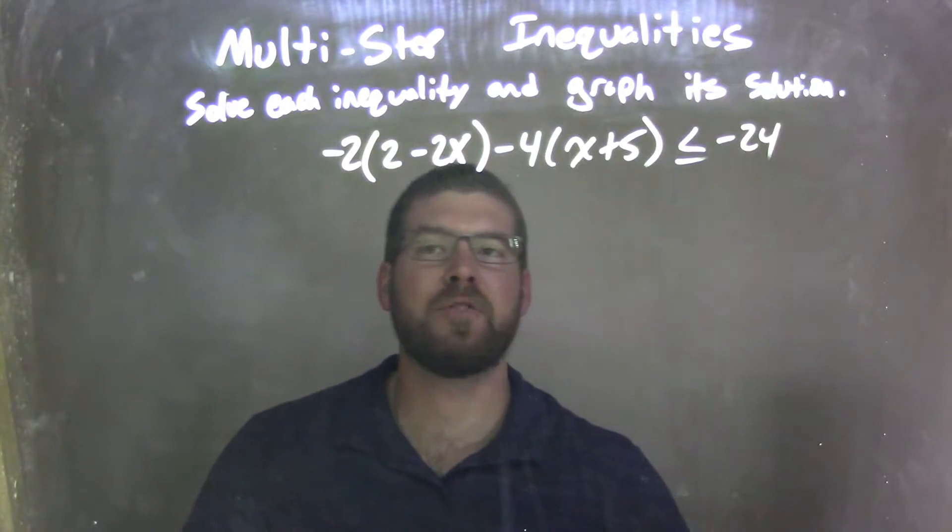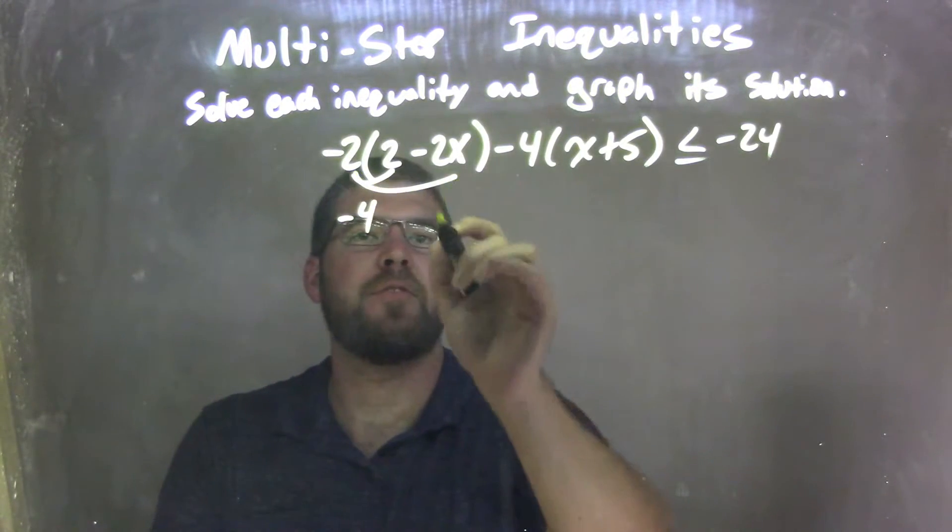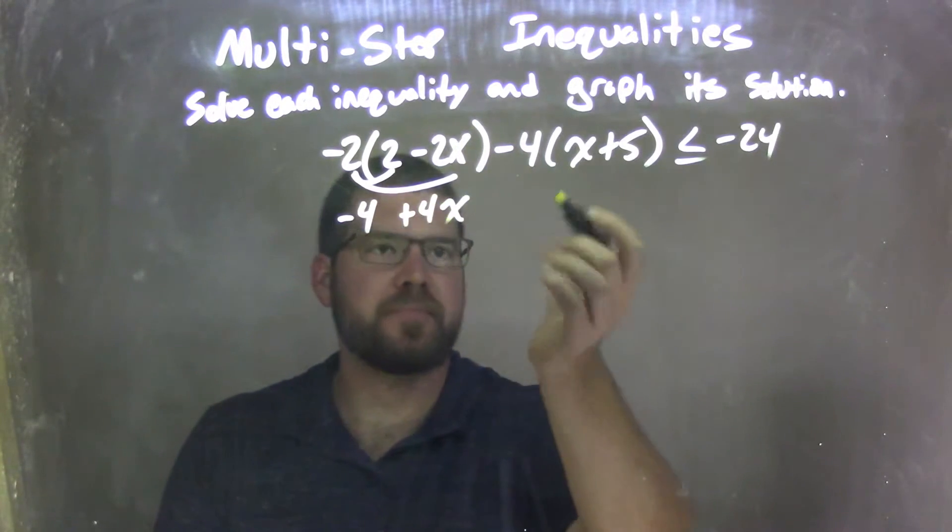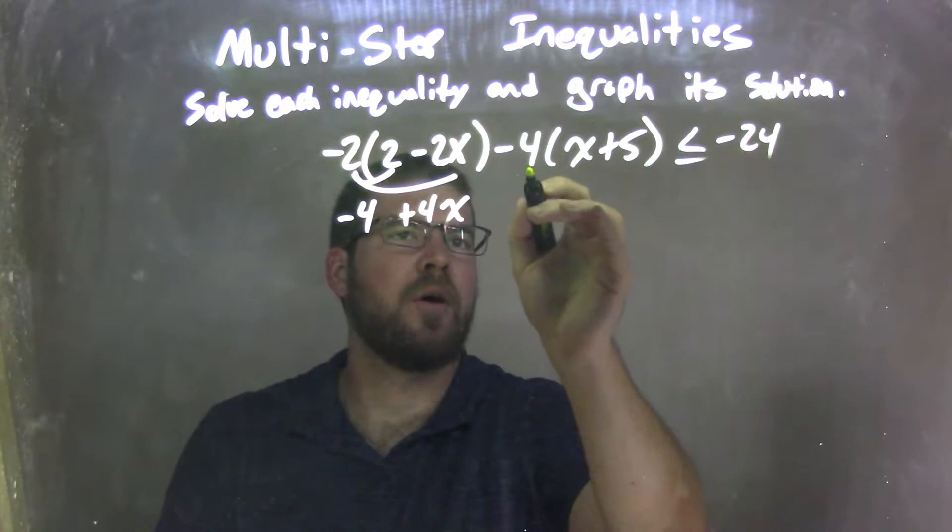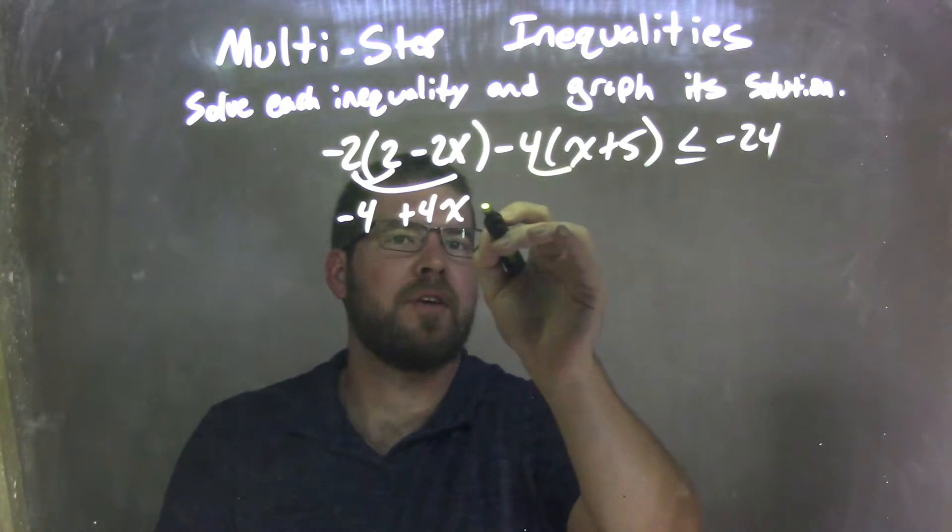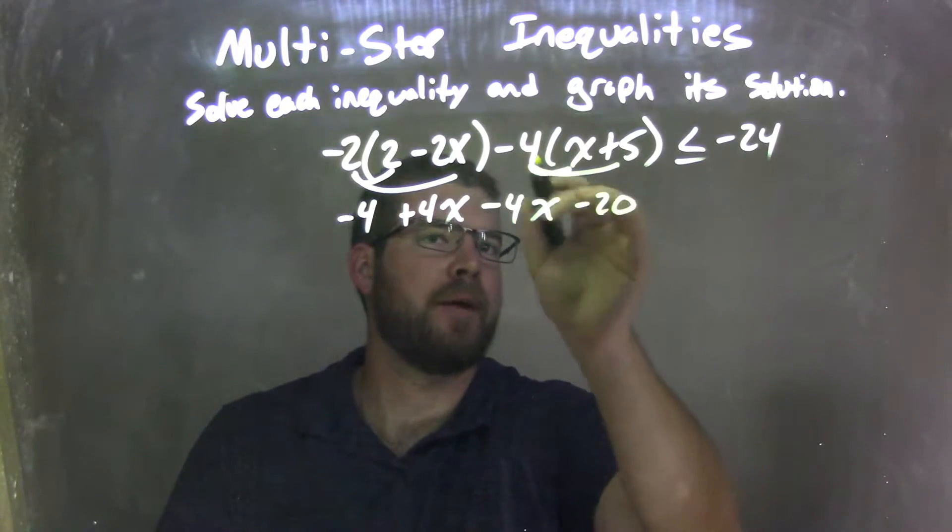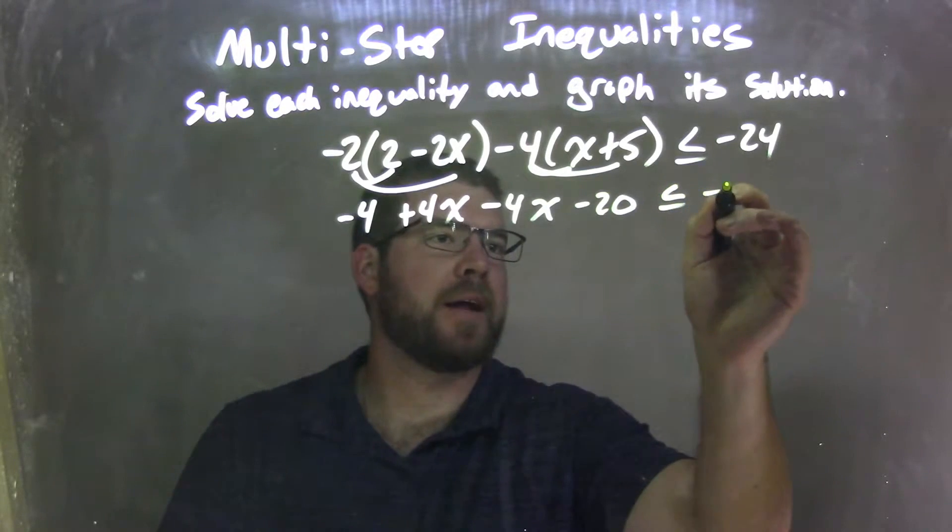Alright, so my first thing I want to do is I'm going to distribute. So negative 2 times 2 is negative 4, negative 2 times negative 2x is positive 4x. Now make sure when we distribute, that minus sign goes to both parts, so 4 times x here is minus 4x, and then 4 times 5 is negative 20. That minus sign needs to go to both parts, is less than or equal to negative 24.